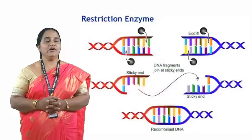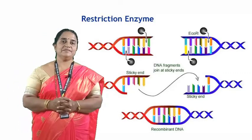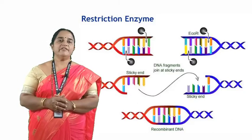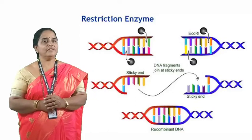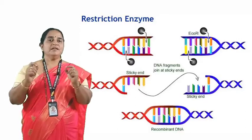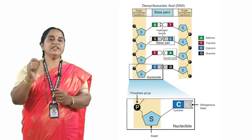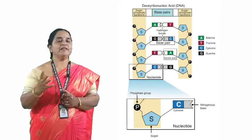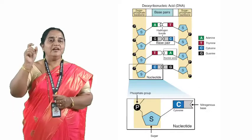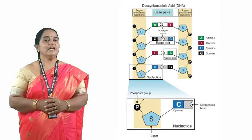Restriction endonucleases are found in prokaryotic cells. The specialty of REN is that they recognize palindromic sequences on the DNA. A palindrome means the nucleotide sequence read from 5' to 3' and from 3' to 5' remains the same — it can be read in both backward and forward directions. It usually contains a minimum of 4 or maximum of 6 base pairs. Restriction endonuclease recognizes such palindromes and uses a specific site for restriction, meaning it cleaves the DNA molecule at a particular targeted site.